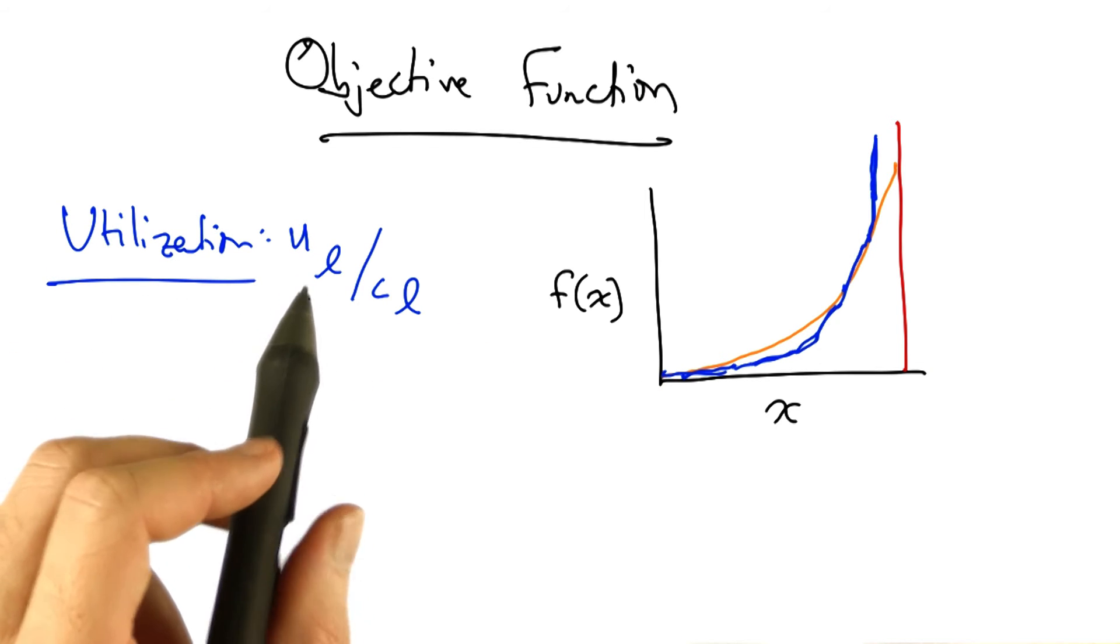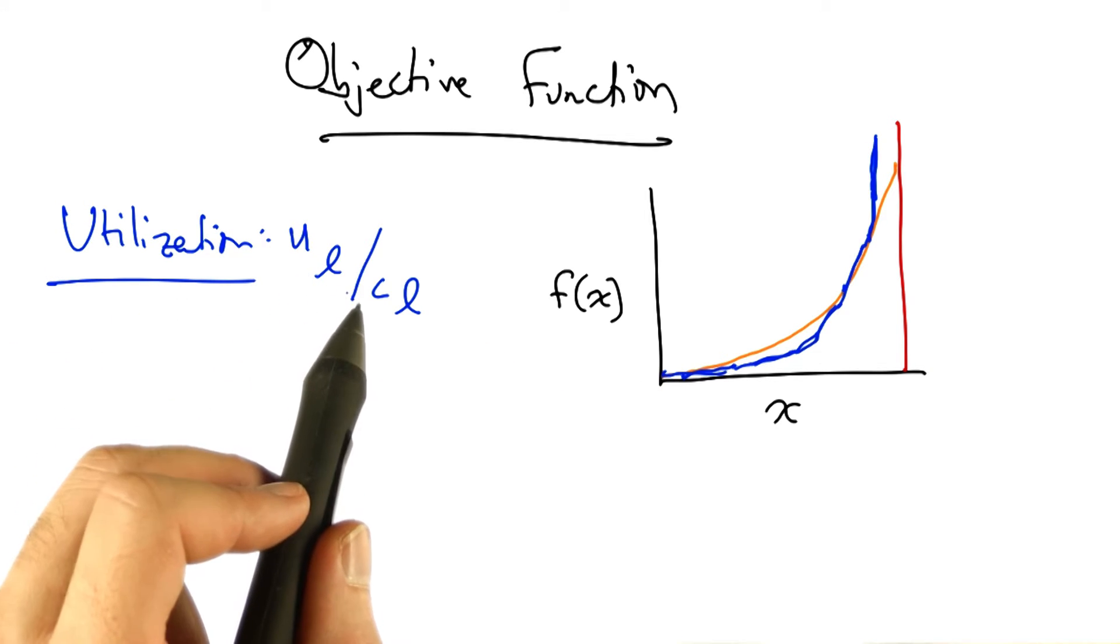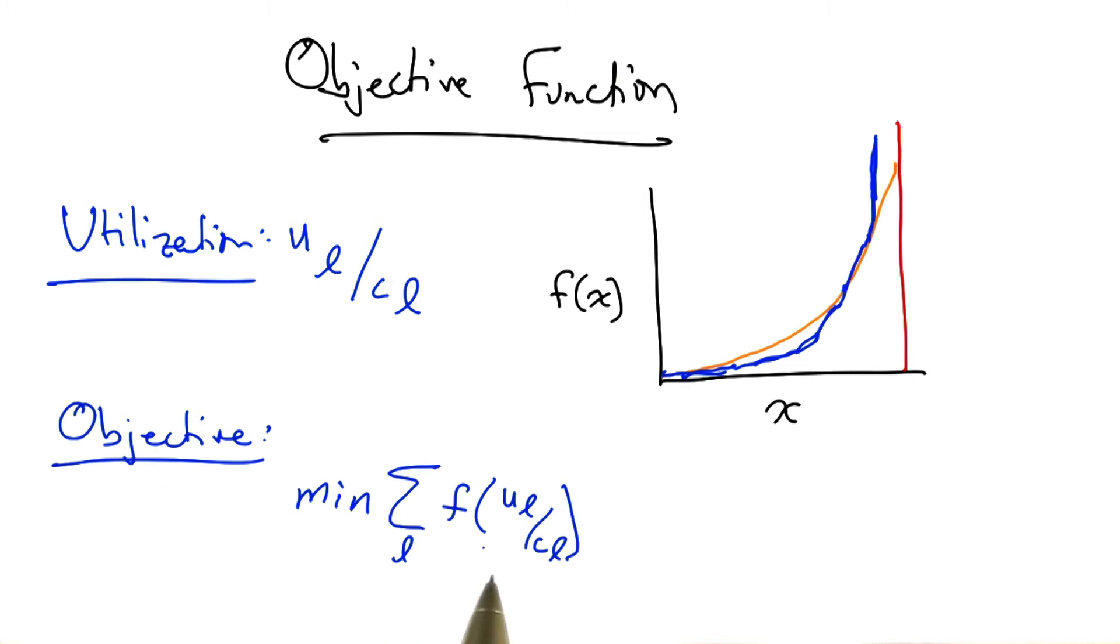We can define utilization as the amount of traffic on the link divided by the capacity, and our objective might be to minimize the sum of this piecewise linear cost function over all the links in the network.